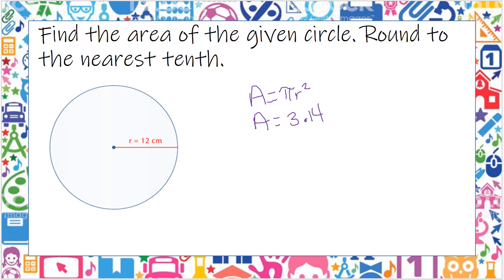If they ask you for an exact number, you're going to leave it as pi. But since it says round to the nearest tenth, we're going to put 3.14 times my radius squared.